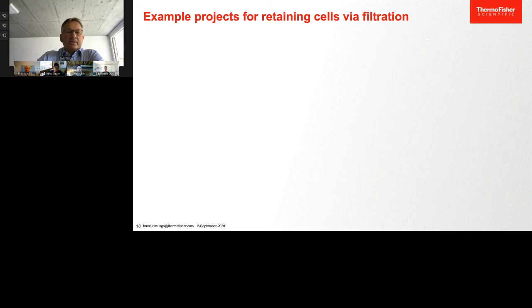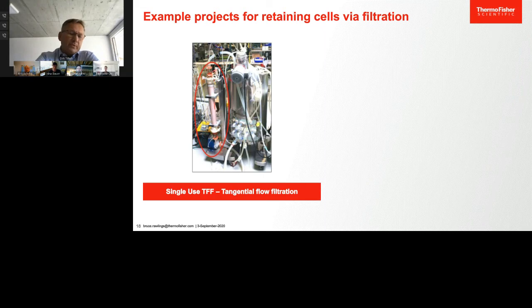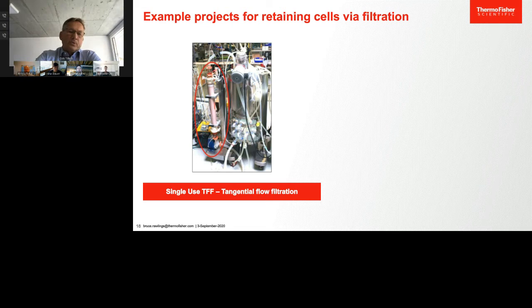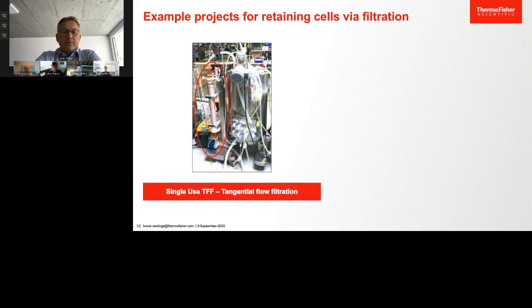Looking at retaining cells via filtration, here is an example of the usage of a TFF system. You might recognize the vessel on the right, and in the red circle there is a filter cartridge with the blue circulation pump just beneath it. We mounted both directly onto the skid of the SUB so we can utilize the already existing load cells of the SUB to have the total weight, minimize the flow path length, and reduce personal safety risk due to the compact design.